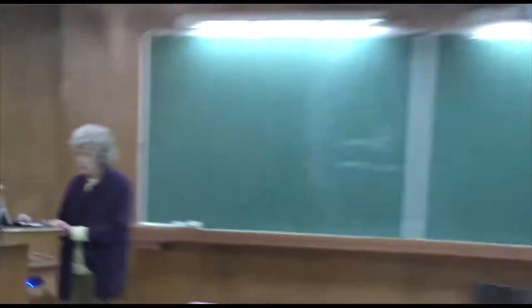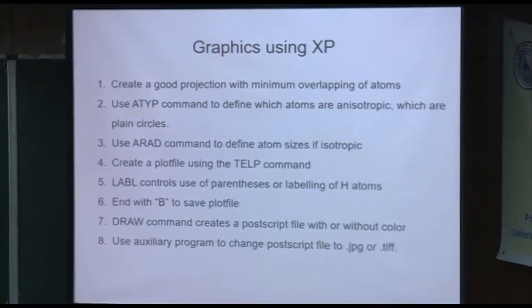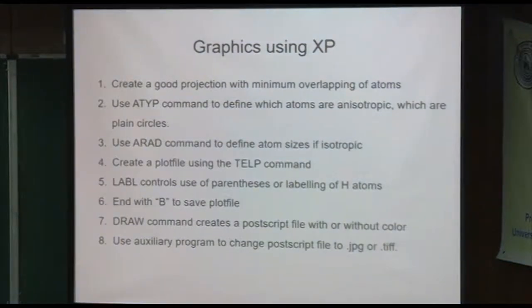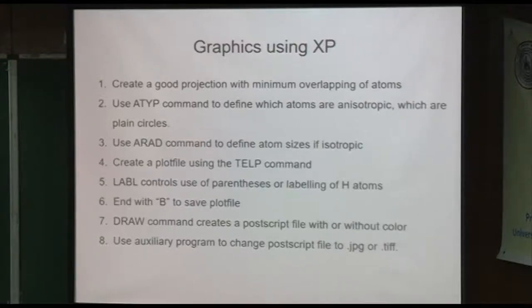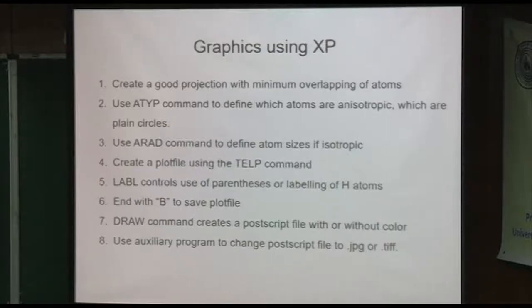ARAD controls the size if it's isotropic. If it's anisotropic, when you go to do the drawing you tell it what percent probability thermal ellipsoid you want — most of the time 50 percent probability. For a circle, you can adjust the size. Then you create a plot file using the TELP command. Before you do TELP, you should say 'label,' because label controls whether you have parentheses like C(1) or just C1, and whether or not you label hydrogens. You should say that before you do TELP. As you create the diagram, you can exit with a B command or go to the end.